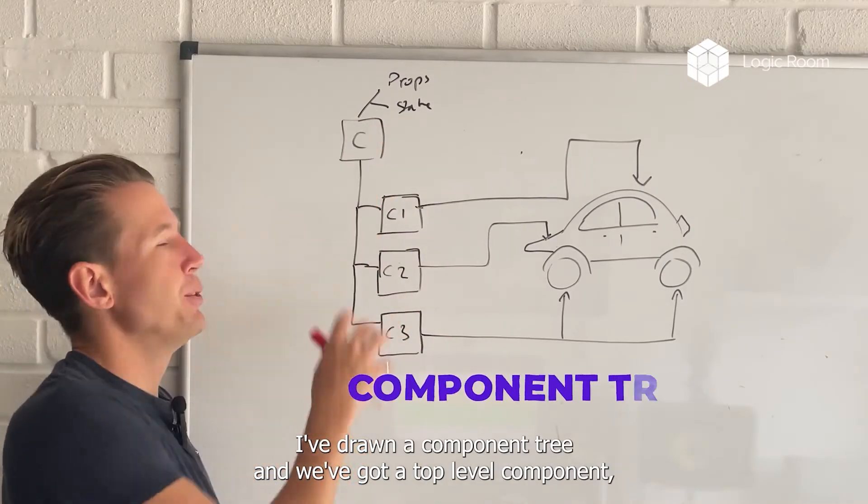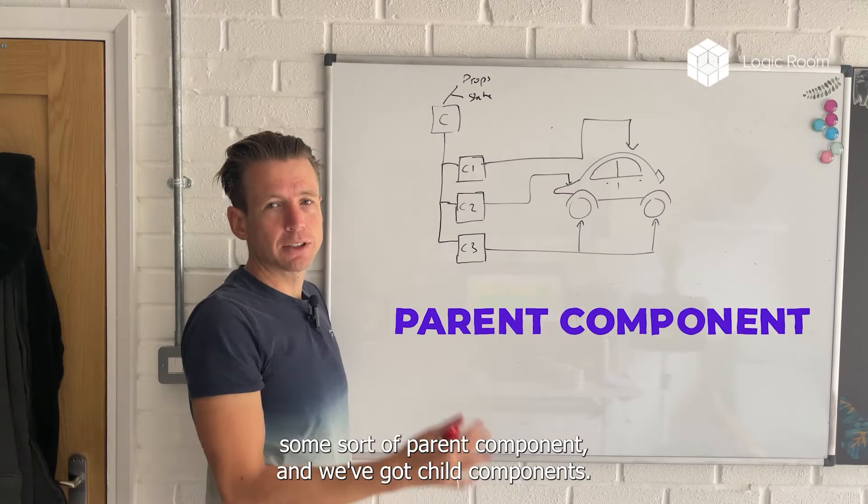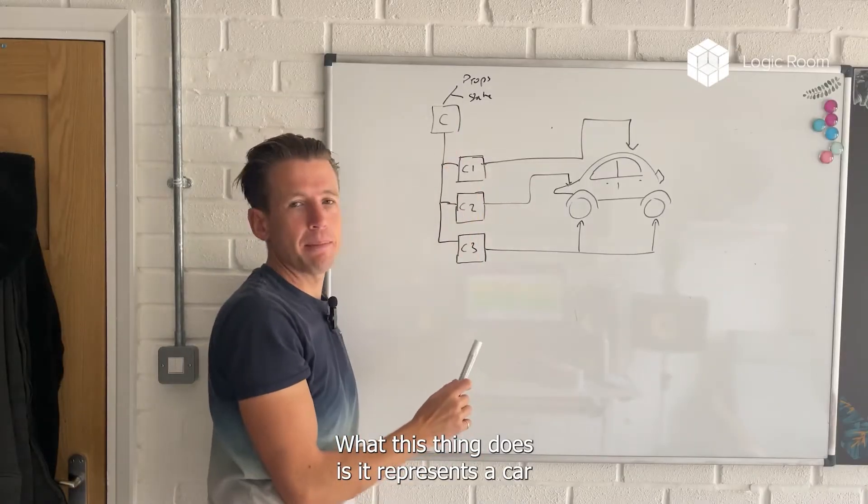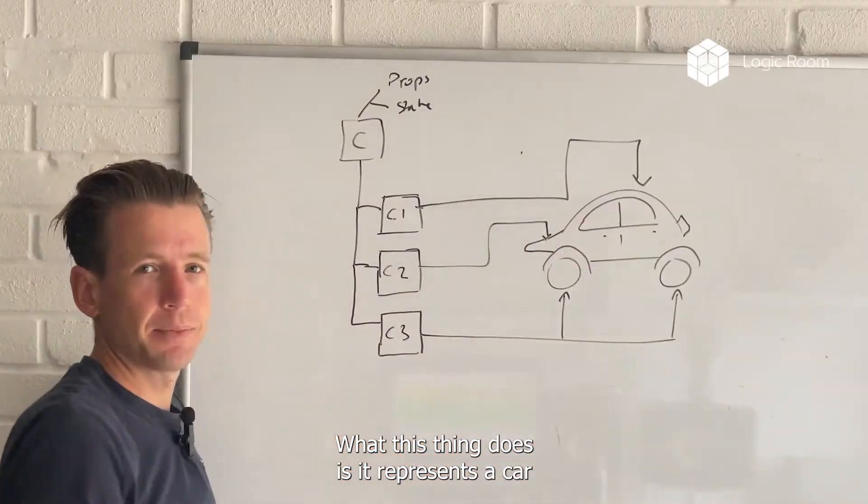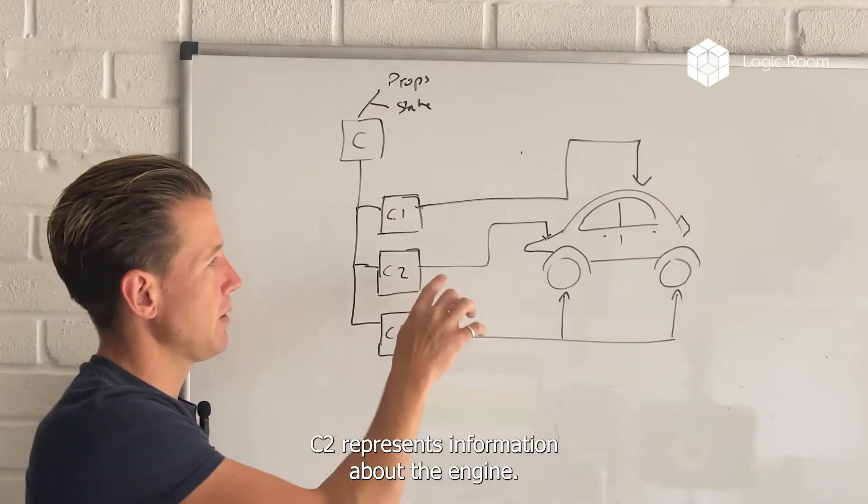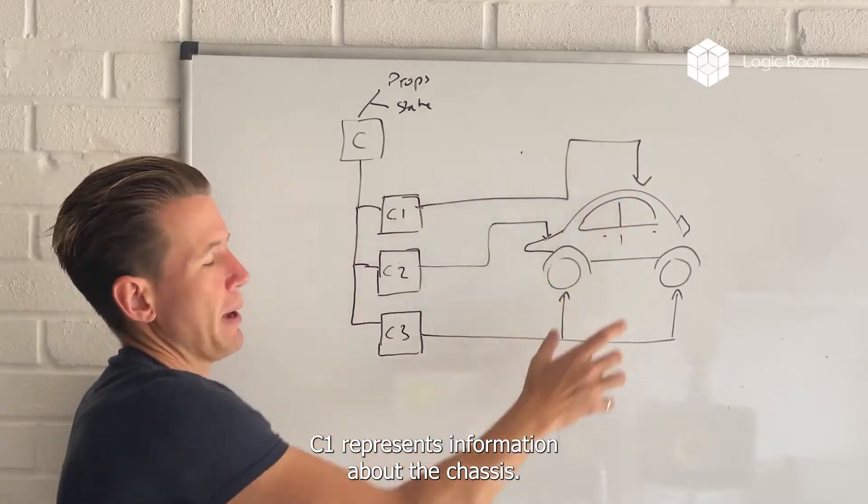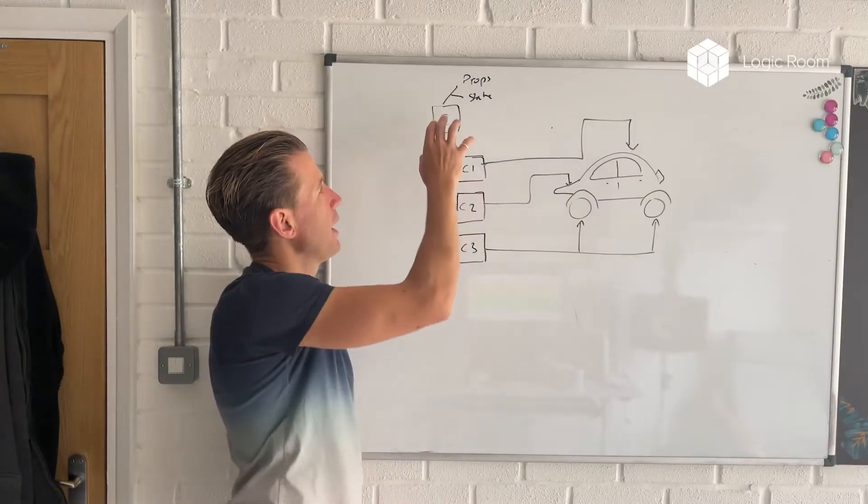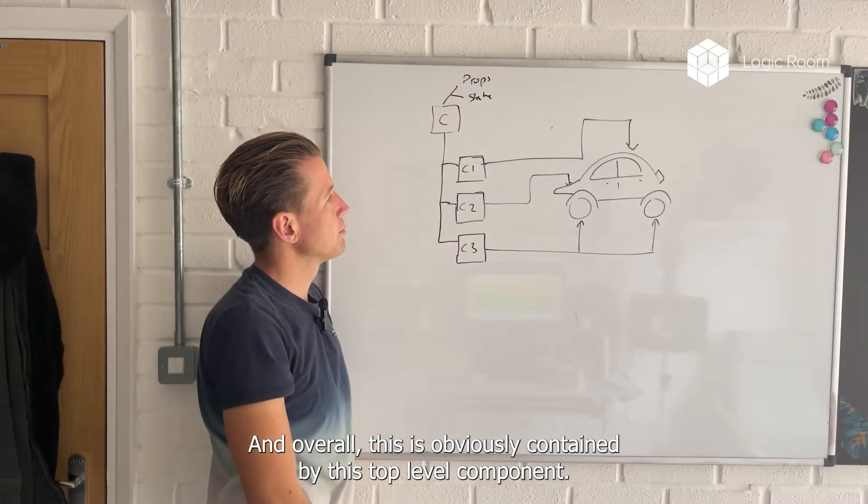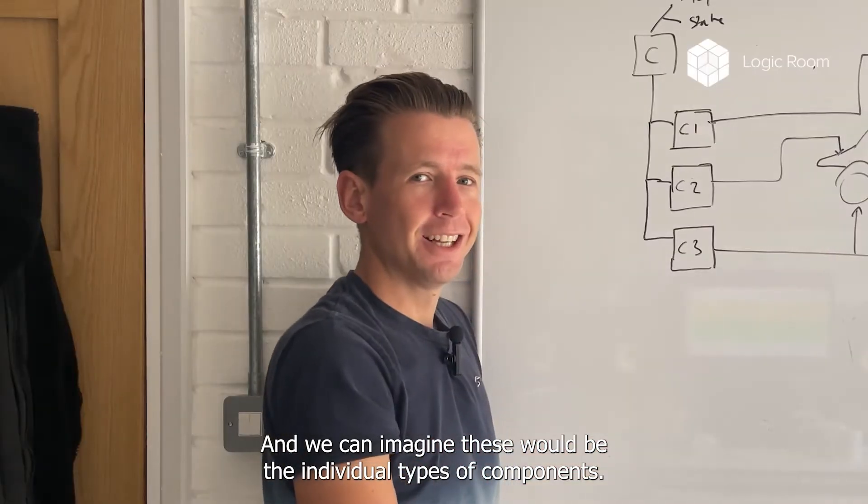What I've drawn here is a component tree with a top level component, a parent component, and child components. And what this thing does is it represents a car. You can see here that C3 represents information about the wheels, C2 represents information about the engine, and C1 represents information about the chassis. Overall this is contained by this top level component. So this could be the car component, and you can imagine these would be the individual types of components.